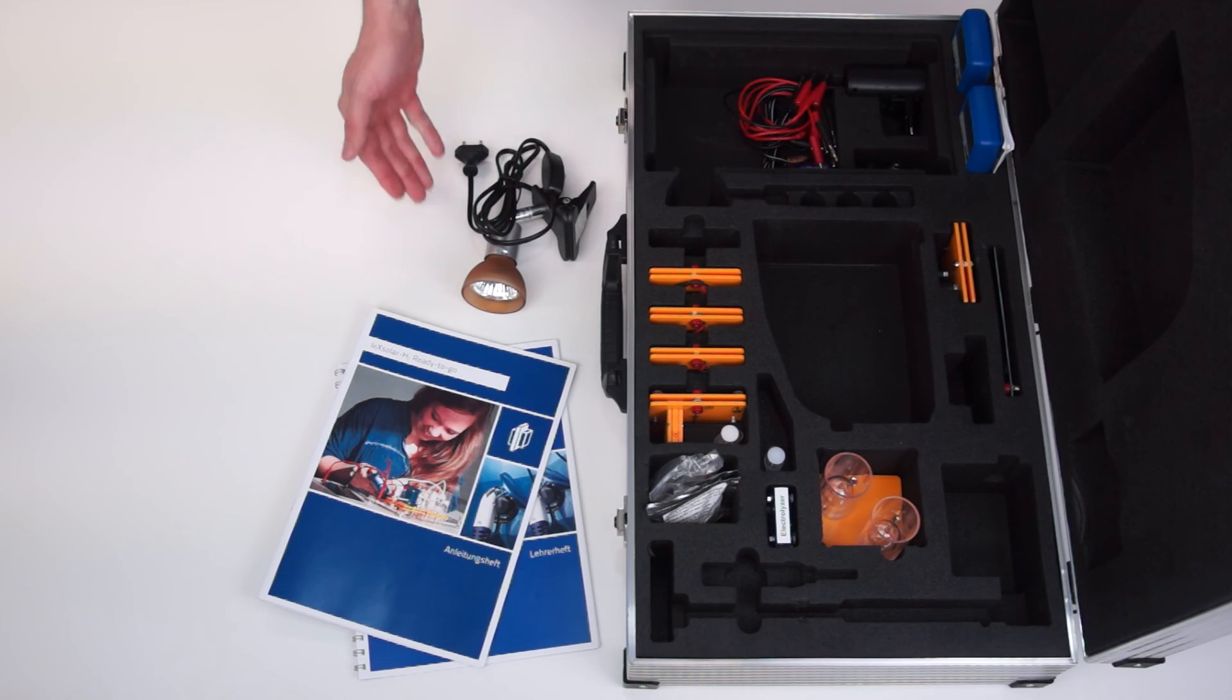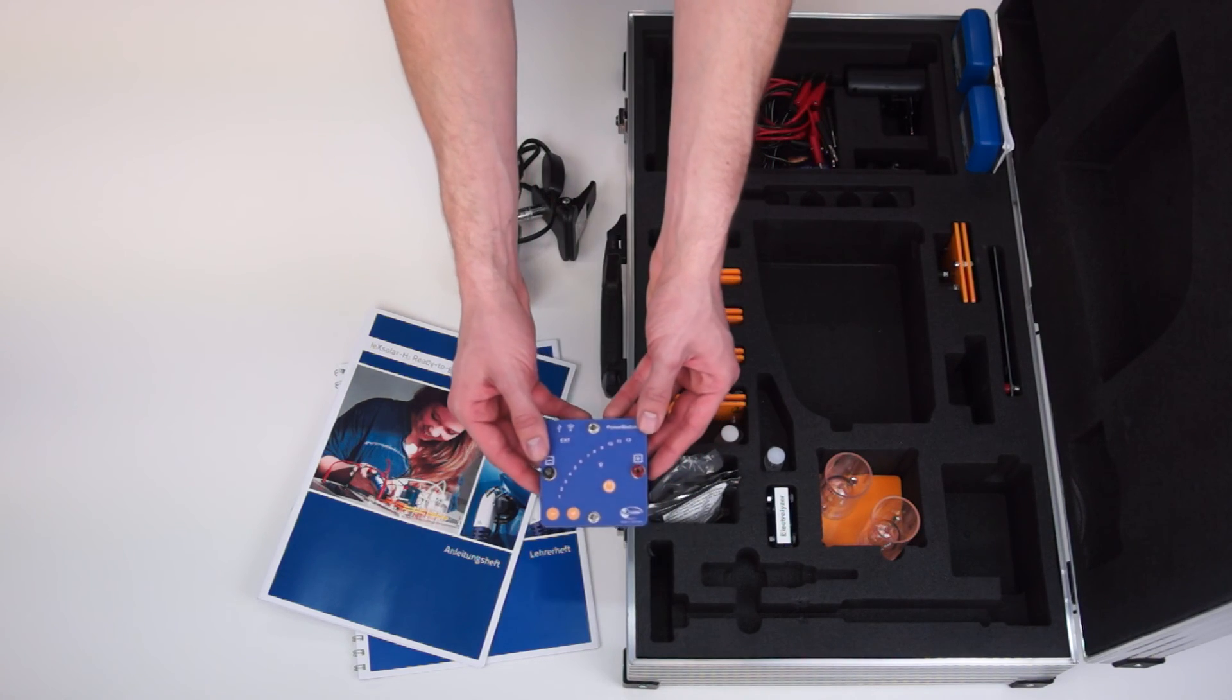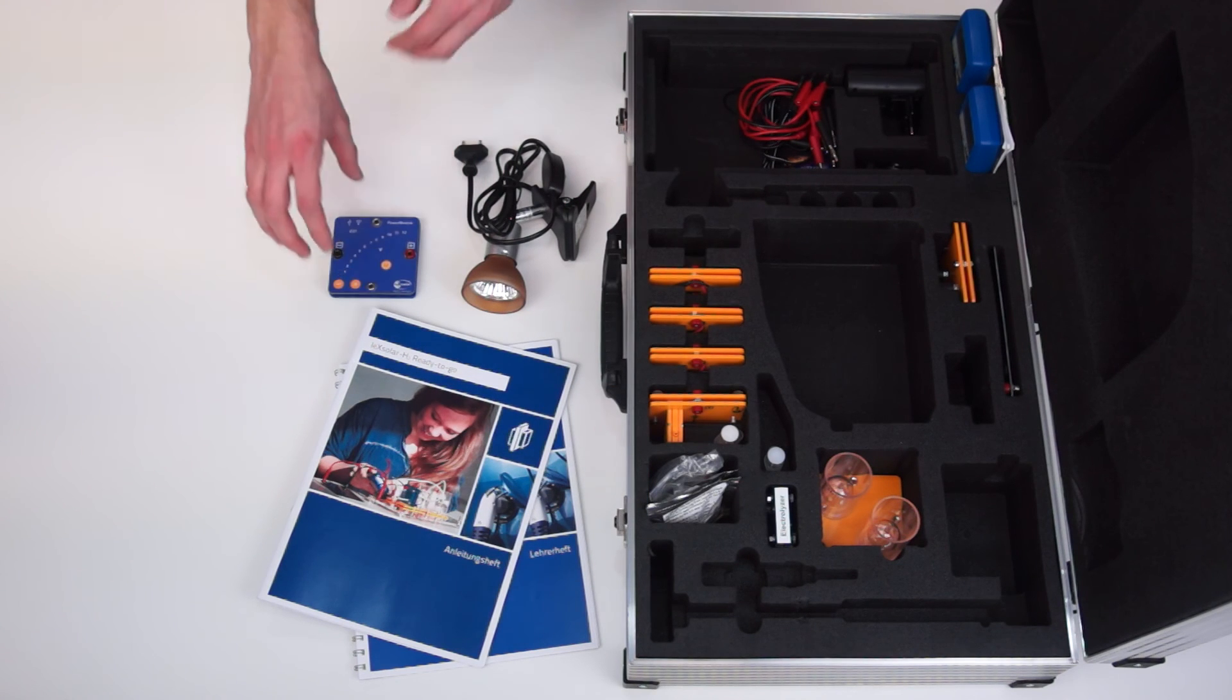The second option is to use the power module which we set aside at the beginning. The power module is a voltage source which can generate voltages between 0.5 and 12 volts in 0.5 increments. It can produce higher voltages than the solar cell and thus operate the hydrogen production faster.